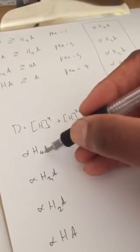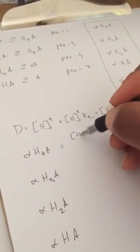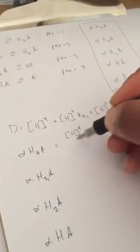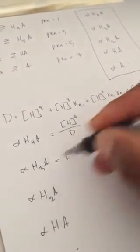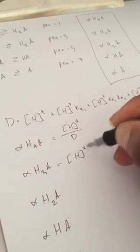So one, two, three, four, five equations. And so the first one you have all the protons, so you just do H to the fourth power and then divide that by D. Here you have three protons, so it's cubed Ka1 divide that by D.